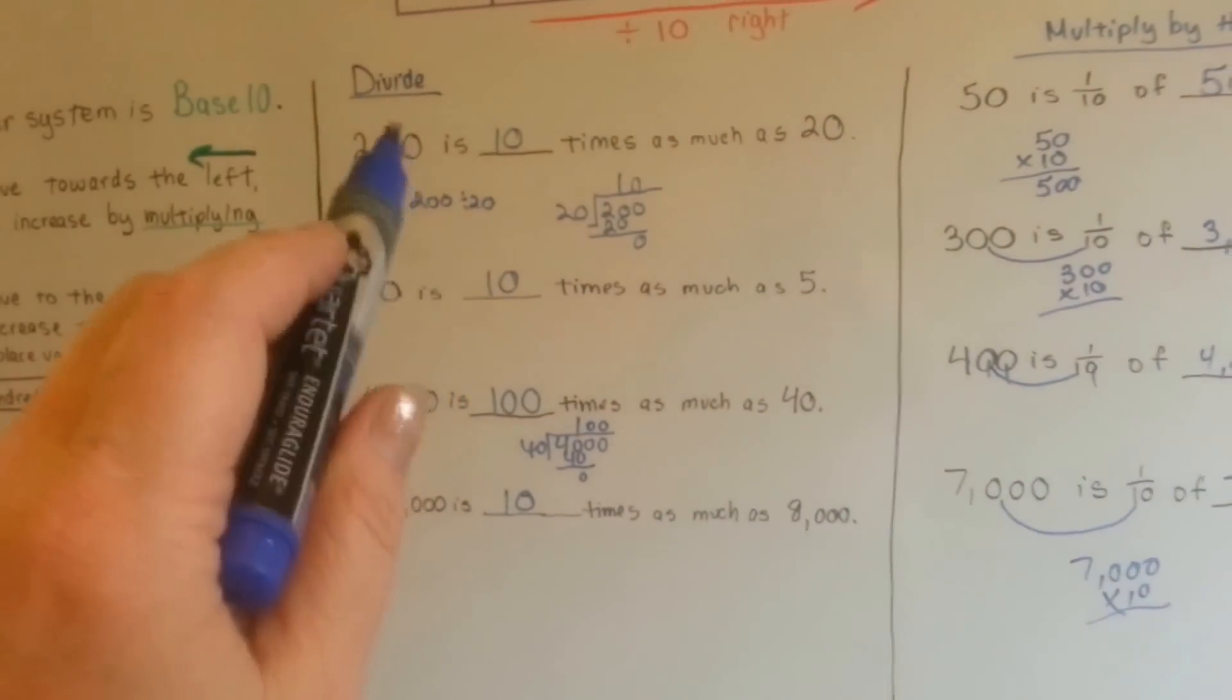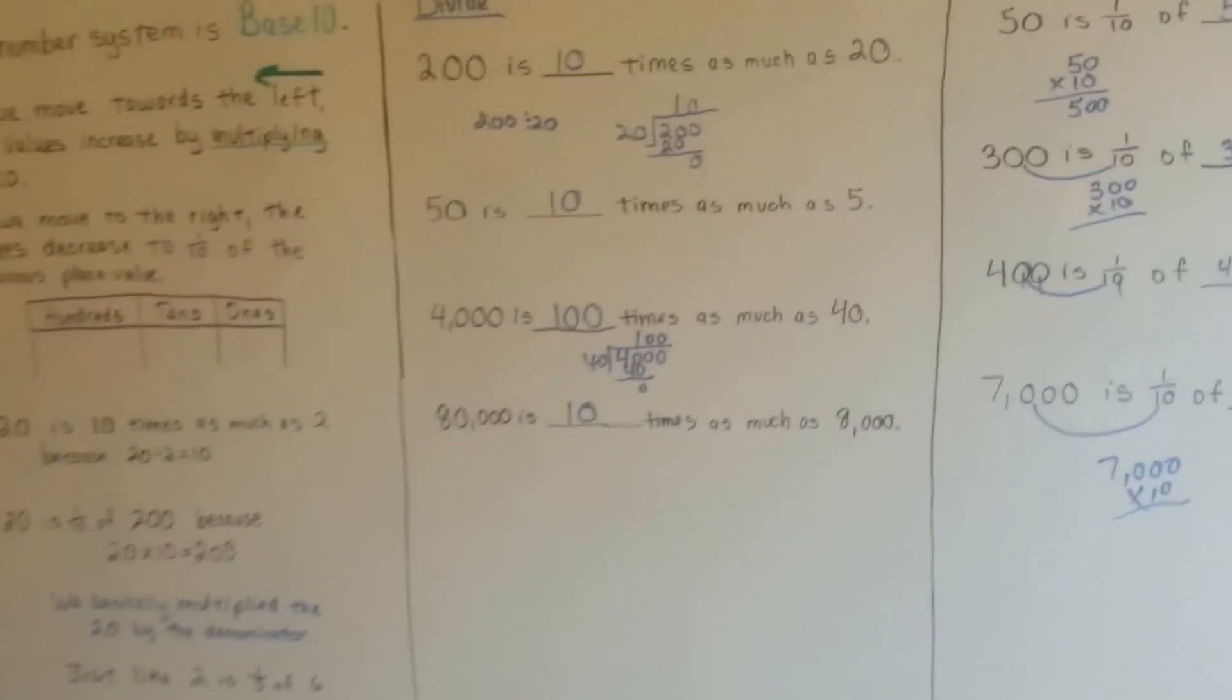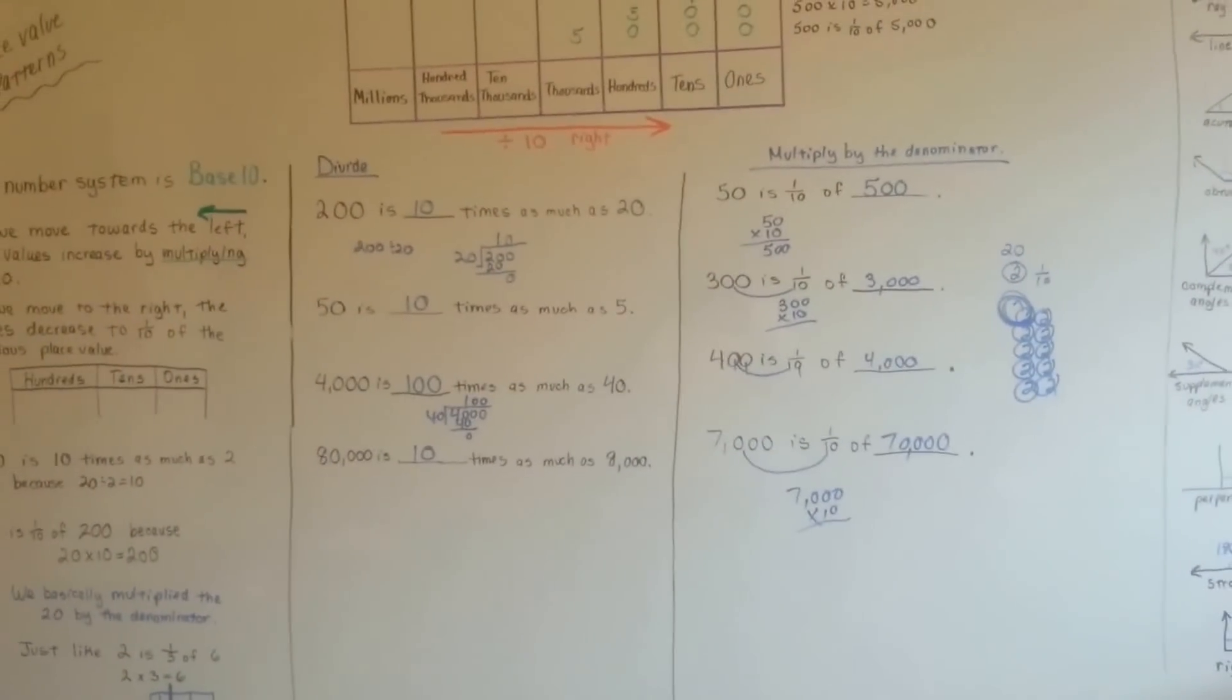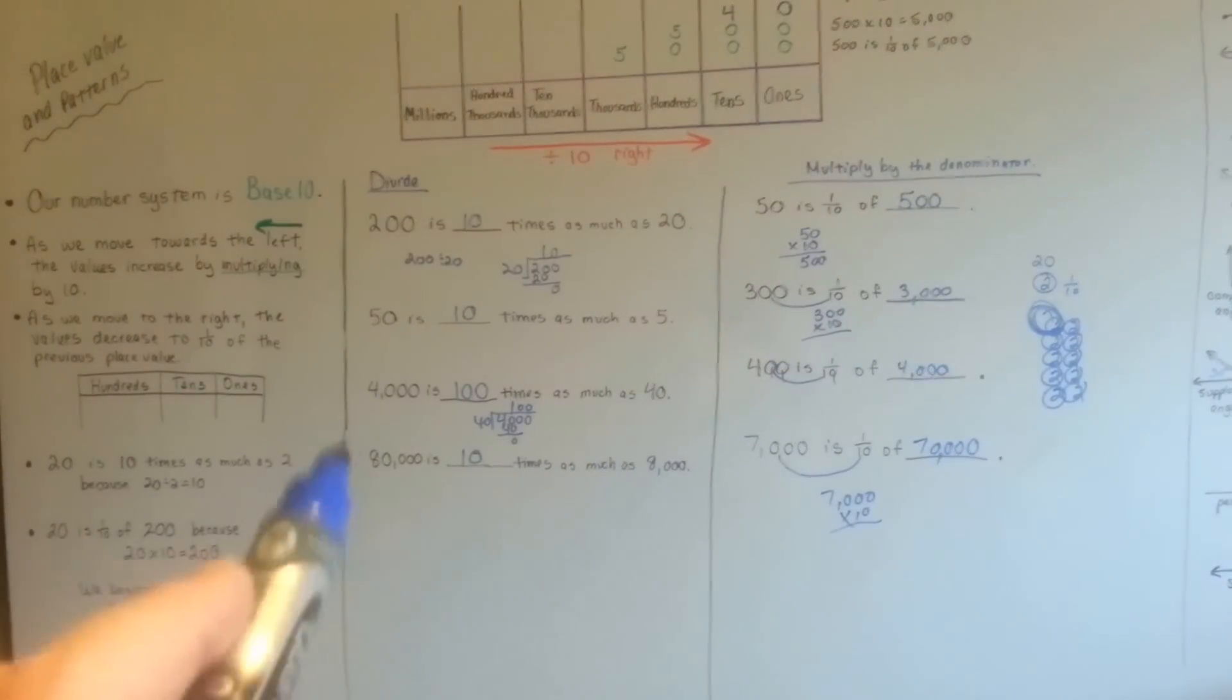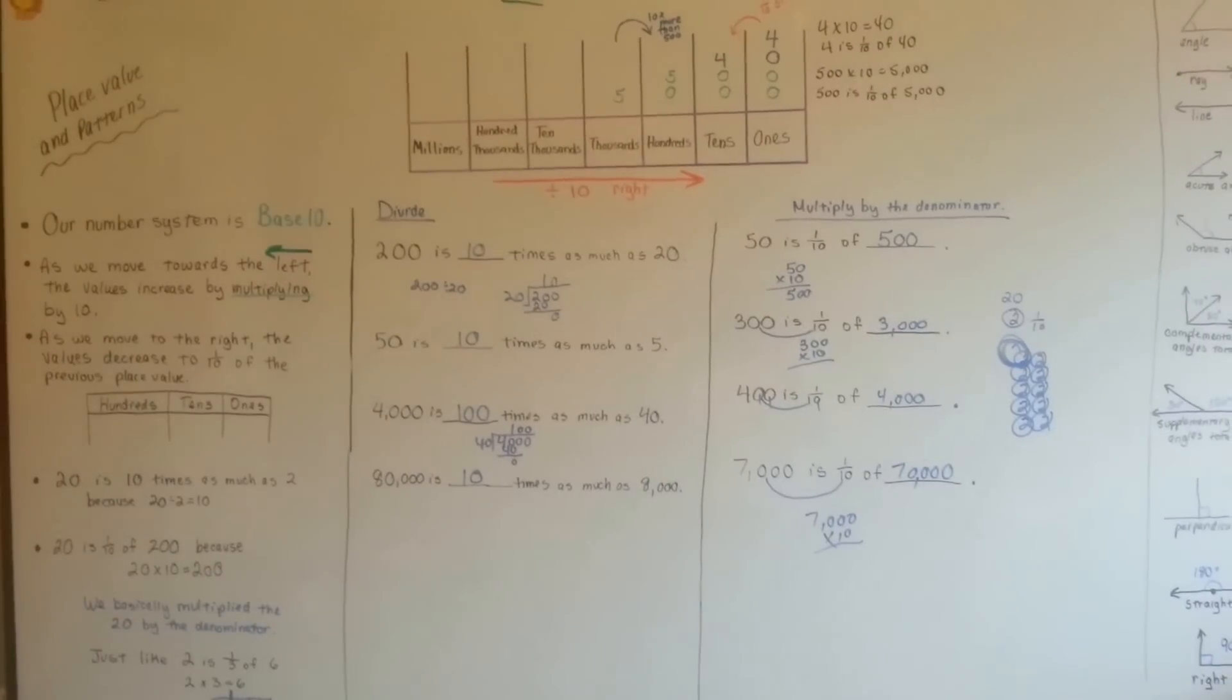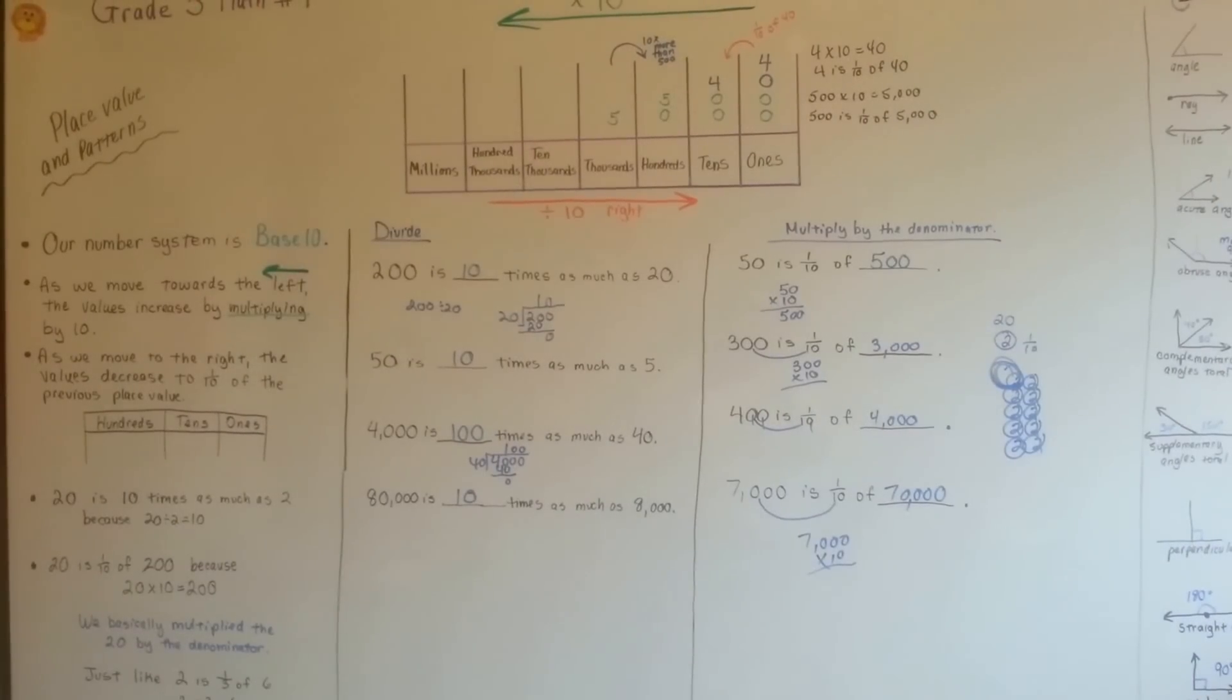And then just remember, when you have to find how many times the number is, you can just divide that small number into the bigger number, and that will tell you how many times. Alright? There's a reason we're doing this. We're going to start getting into exponents soon, and you need to understand how a number can be a hundred or ten or a thousand times another number, because we're going to be getting into exponents and stuff, and we want you to understand this. Okay? I hope this helped. See you next video. Bye!